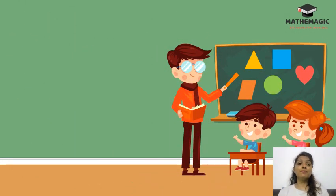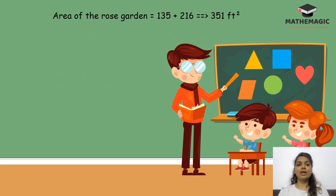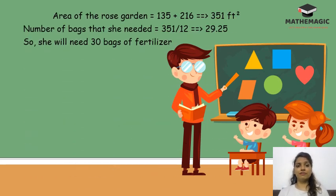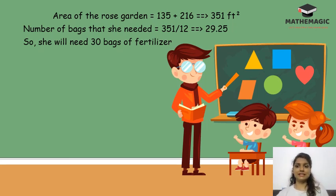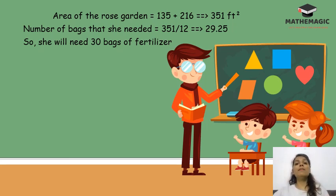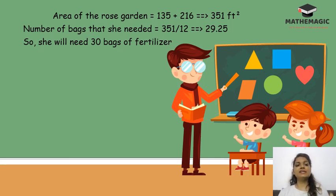The area of the rose garden is 351 square feet. The next question asks how many bags of fertilizer will be needed if one bag covers 12 square feet. The answer is 351 ÷ 12 = 29.25, so Teresa will need approximately 30 bags of fertilizer.